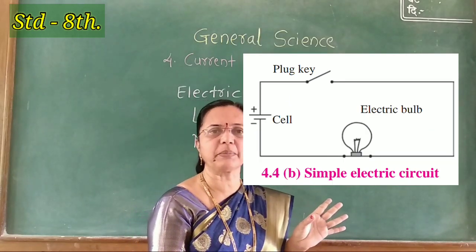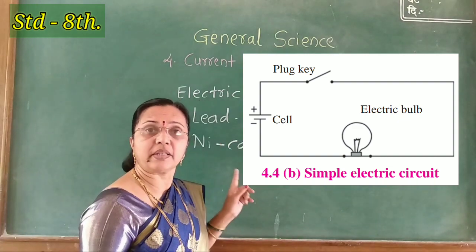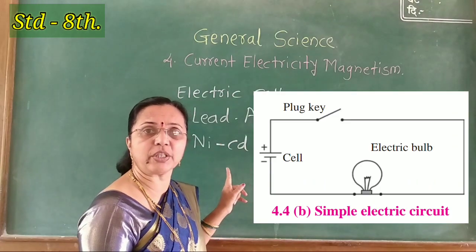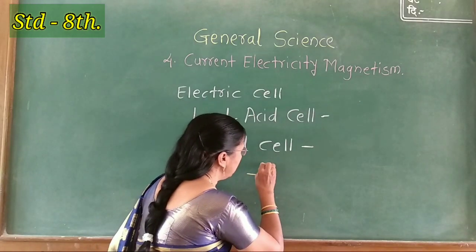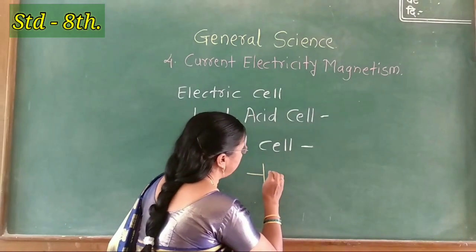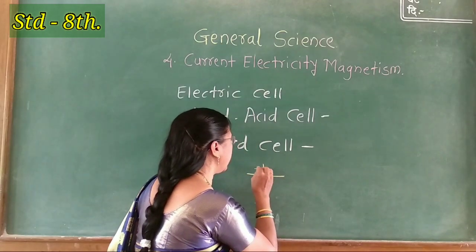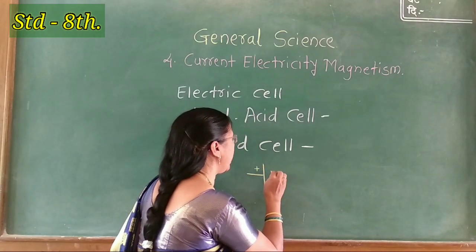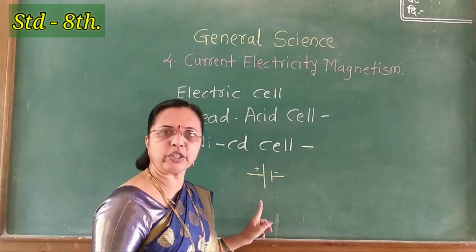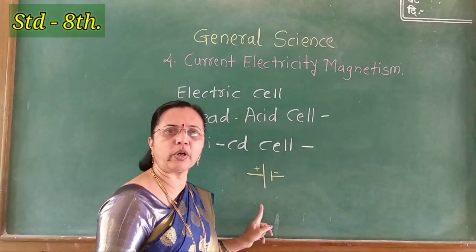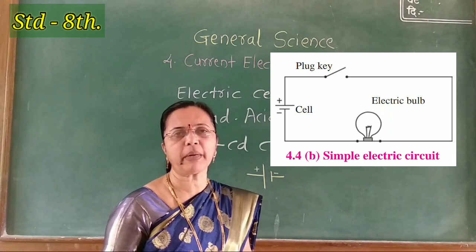This circuit is shown by a figure. The cell is shown by a symbol. Here the first big line is followed by a small line. The big line indicates the positive terminal and the small line indicates the negative terminal. The cell is shown by this symbol.